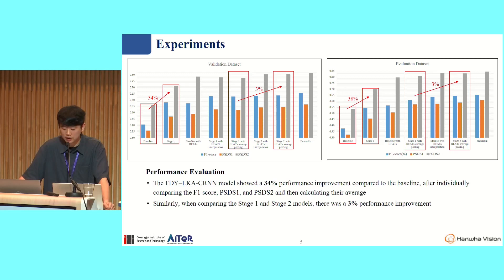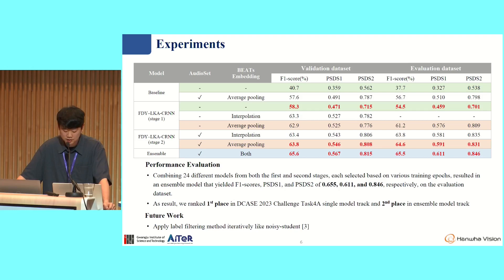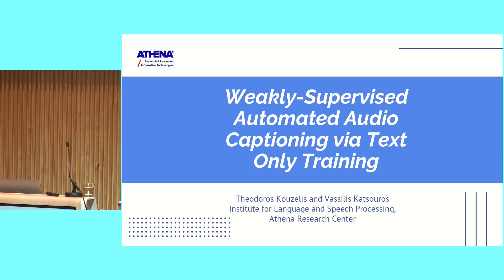We created an ensemble model consisting of 24 different models selected based on various training epochs. As a result, we ranked first place in the DCASE challenge Task 4A single model track and second place in the ensemble model track. Our next steps include applying the label filtering method iteratively, similar to noise student and curriculum learning approaches. Thank you.